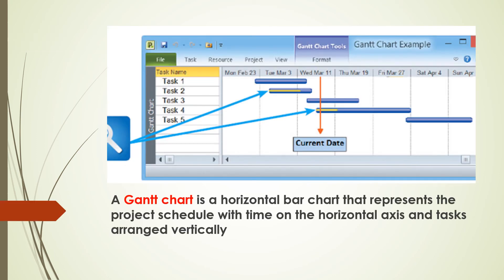Some of the tools that can be used for planning and scheduling a project can include a Gantt chart, which is a horizontal bar chart that represents the project's schedule with time on the horizontal axis, and tasks arranged vertically, as you can see in this picture.